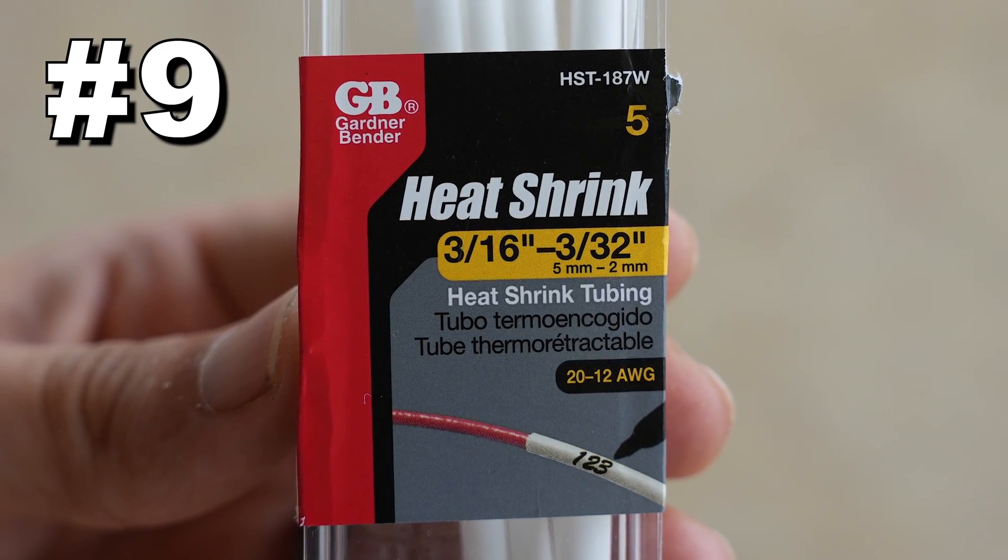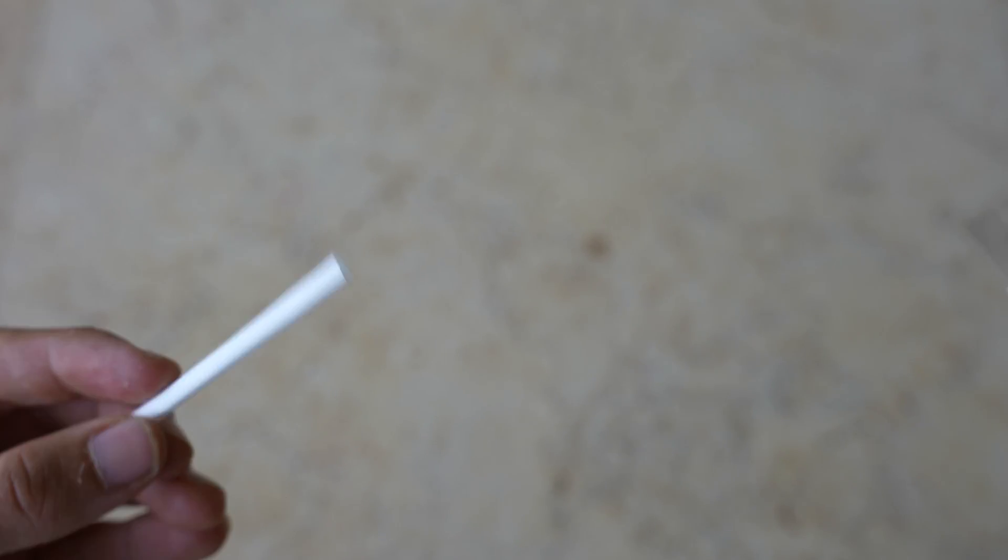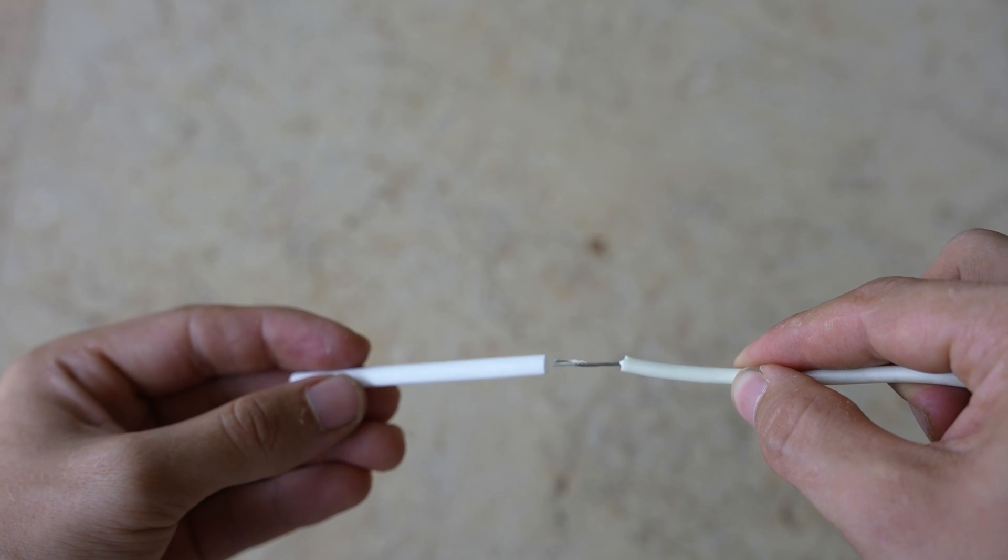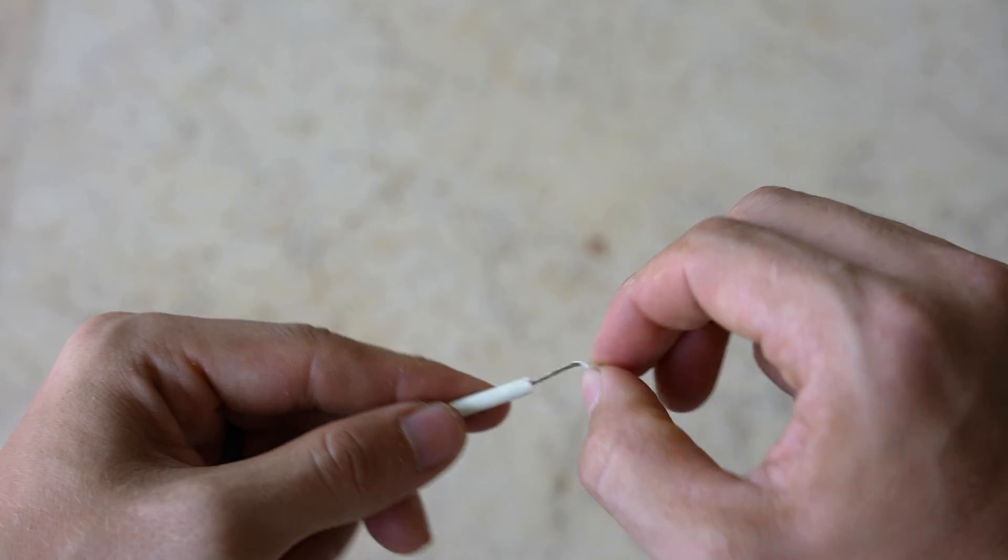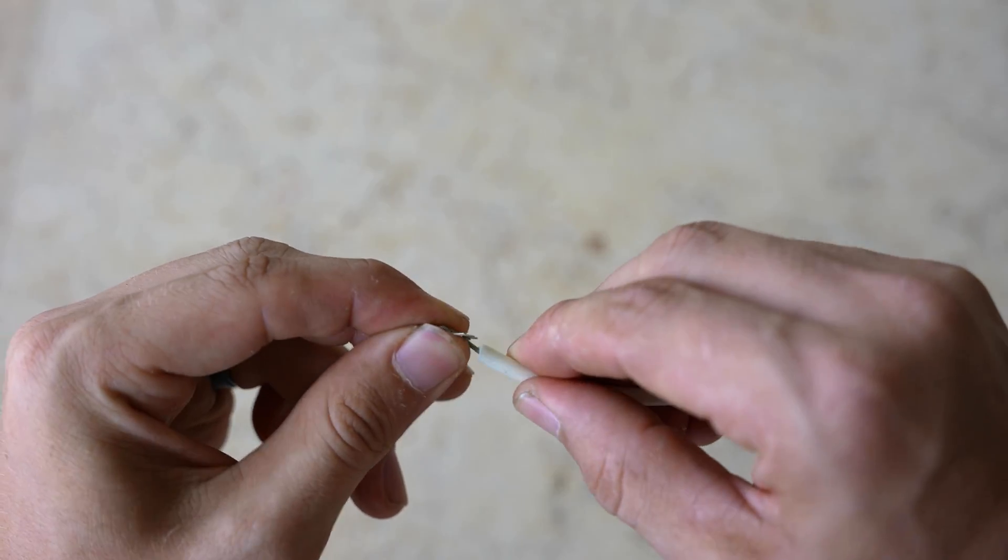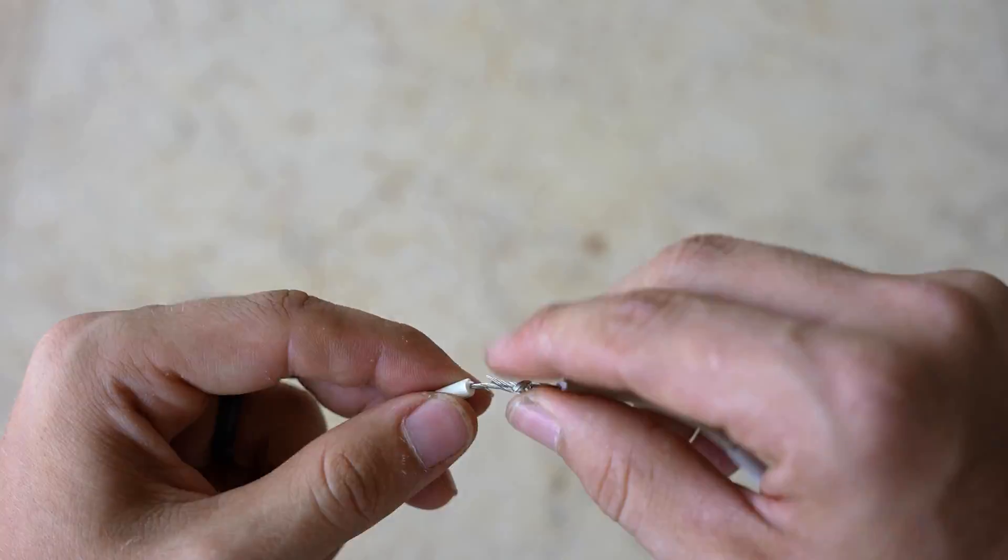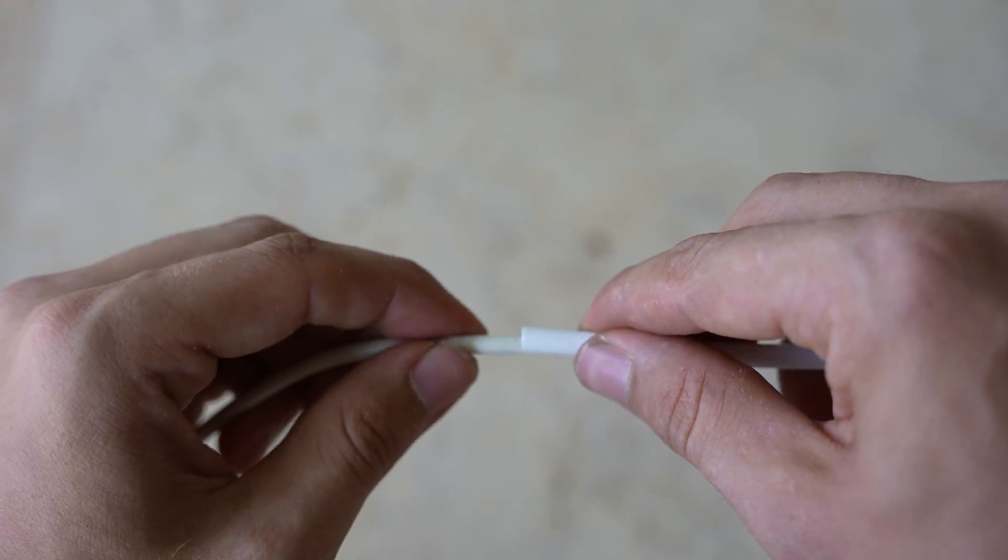Method nine is heat shrink tubing. I like this one the most because it's the cleanest looking repair out of all of them. To begin with, slide the tube, or two of them, onto the wire. Then, bend both bare wires into hooks and hook them onto each other. Next, take the ends of the wires and wrap them around themselves. Now, we are ready to slide on the heat shrink tube and apply the heat.